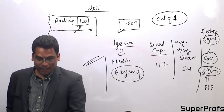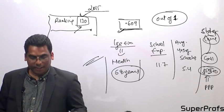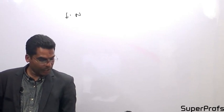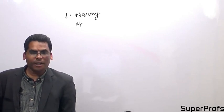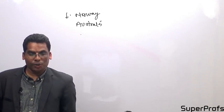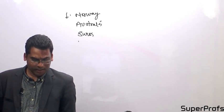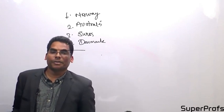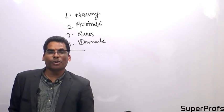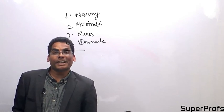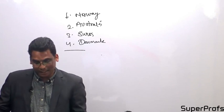India's score is 0.609 and India's rank is 130. Norway is at number 1, then Australia, Switzerland, and Denmark — these are the top developed countries at the top of the HDI ranking.